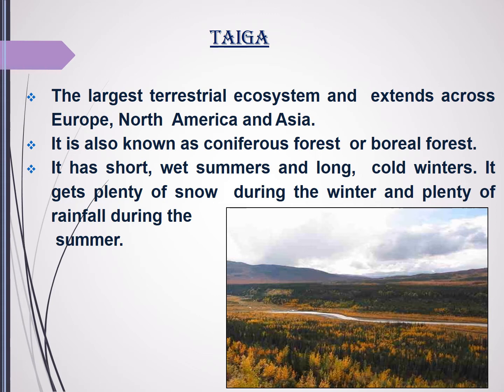Next is the taiga. Taiga ecosystems are the largest of the terrestrial ecosystems and extend across Europe, North America, and Asia. They are known for their coniferous and boreal forests. Taiga has short and wet summers and long and cold winters. It gets plenty of snow during winter and plenty of rainfall during the summers.